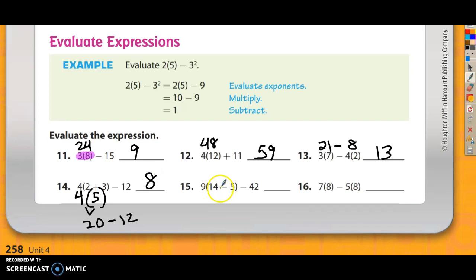Number 15, I've got 14 minus 5, that's 9. And that's in parentheses right next to 9 means 9 times 9, that's 81, minus 42. And this is going to be 39. I could do that mentally, because what if I pretended this was 41? 81 minus 41 would be 40, but it's one more than 41, so it's not going to be 40, it's going to be 39. I have to take one away. And number 16, 7 right next to 8 means 7 times 8, that's 56. And 5 right next to 8 means 5 times 8, that's 40. And 56 minus 40 is 16.